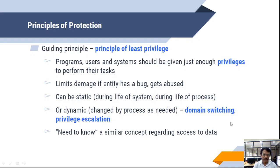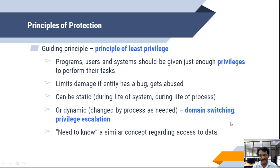Let us continue the discussion regarding the principle of protection. To summarize, the guiding principle is the principle of least privilege. We are giving to the users or the processors the least privileges, so that they cannot access or use other processes and user series. Programs, users, and systems should be given just enough privileges to perform their task, not all the privileges.